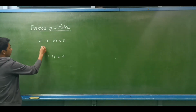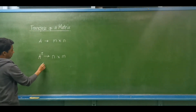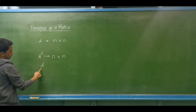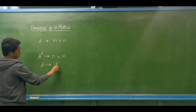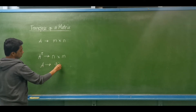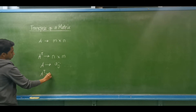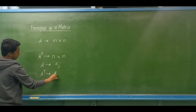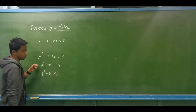From matrix A, if we have an element, for example element A-sub-ij, that element on the transpose matrix will be at position A-sub-ji, since we are just interchanging rows and columns.